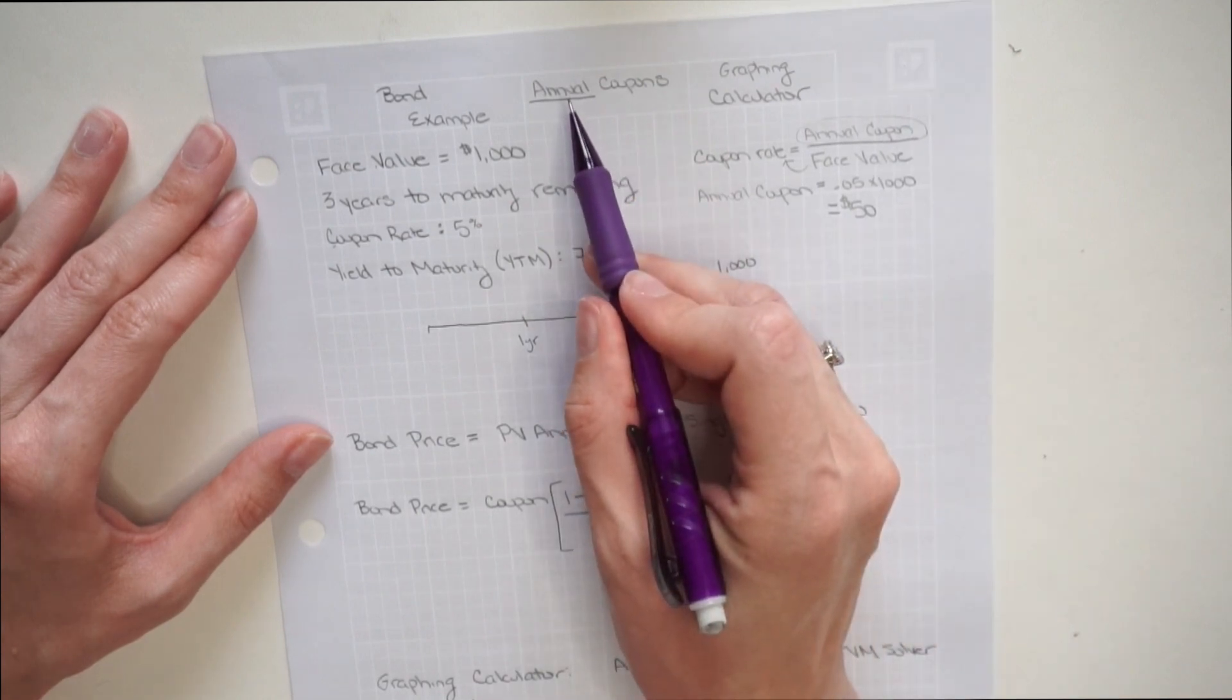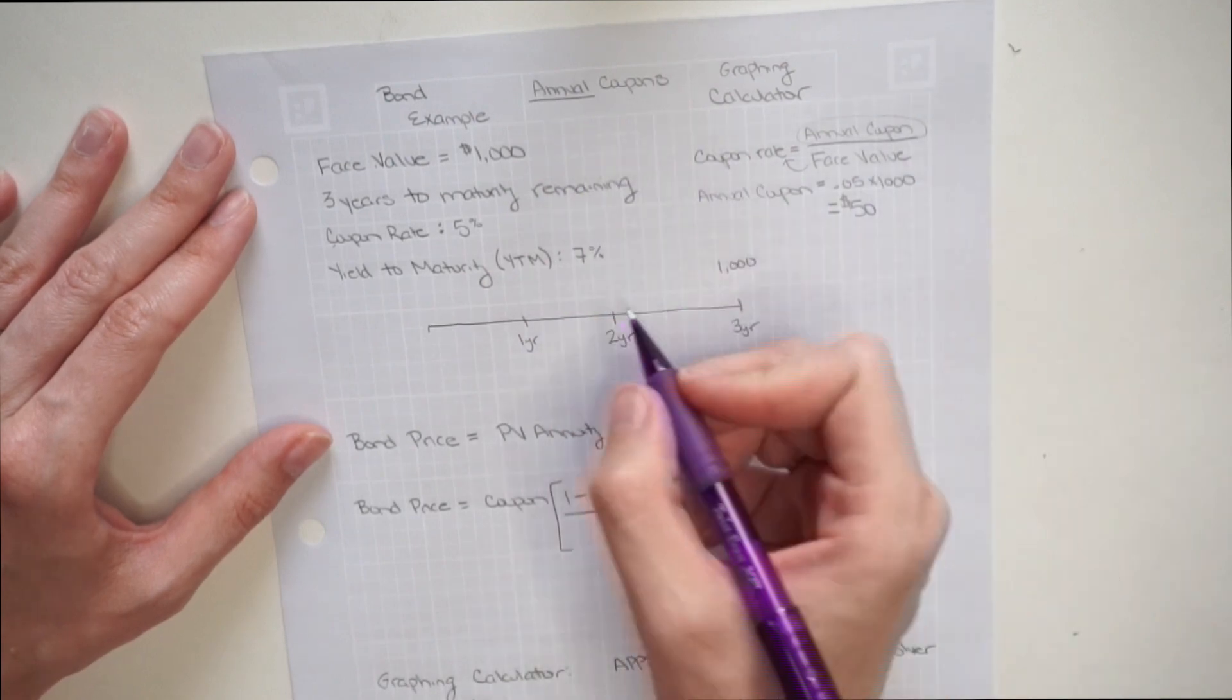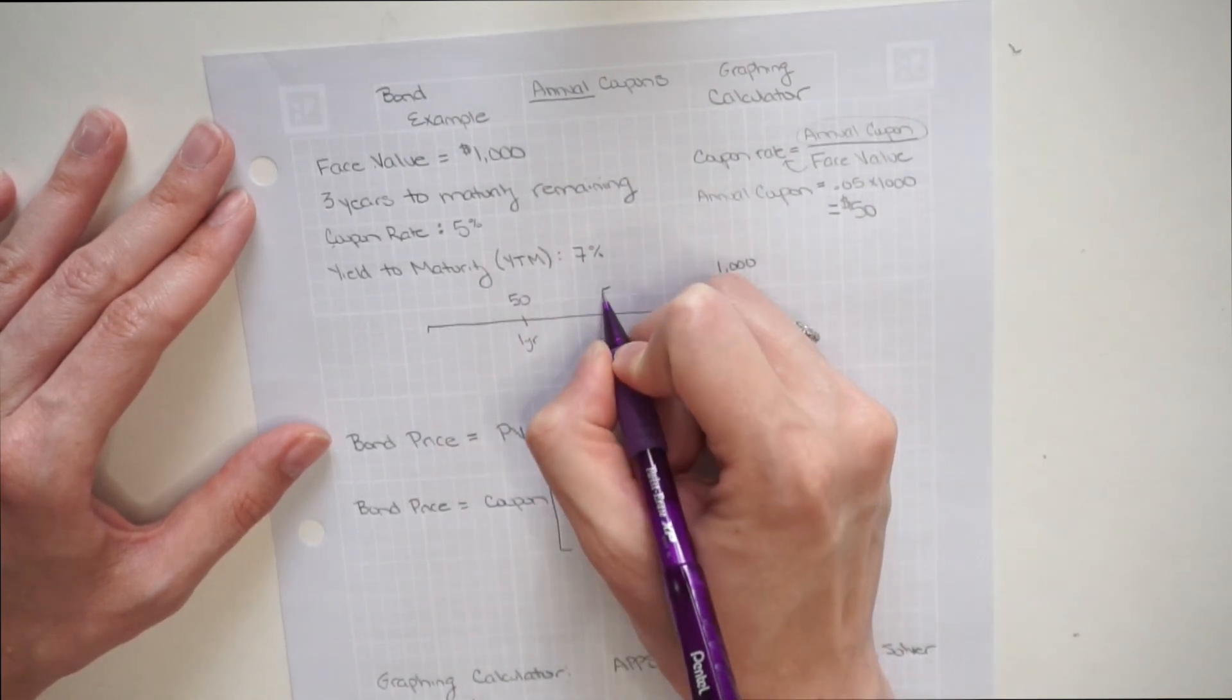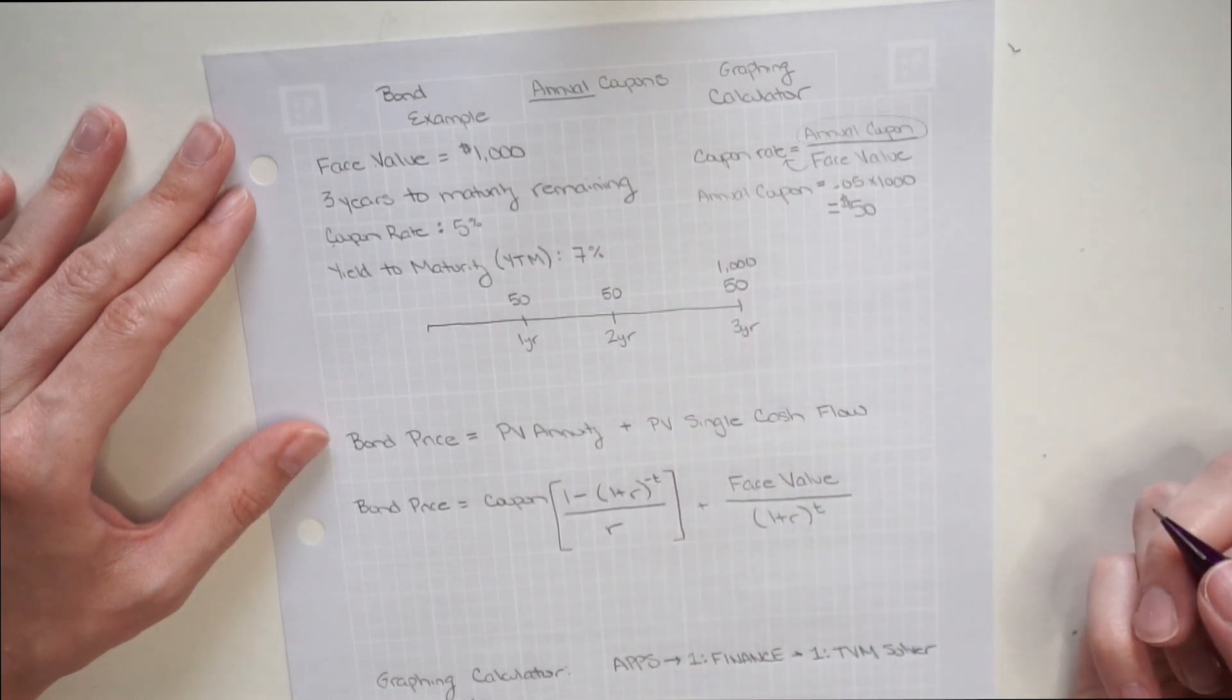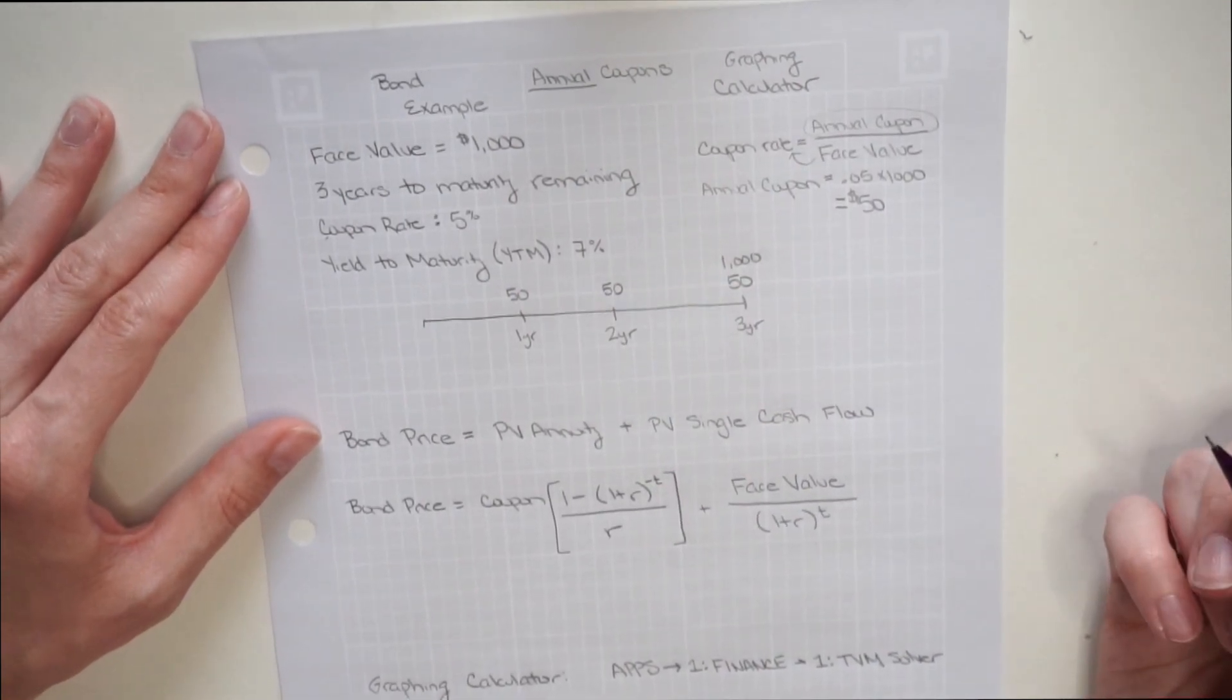And again, in this problem, these are all annual coupons, so that's going to happen each year. Now I have all of my cash flows labeled on my timeline.